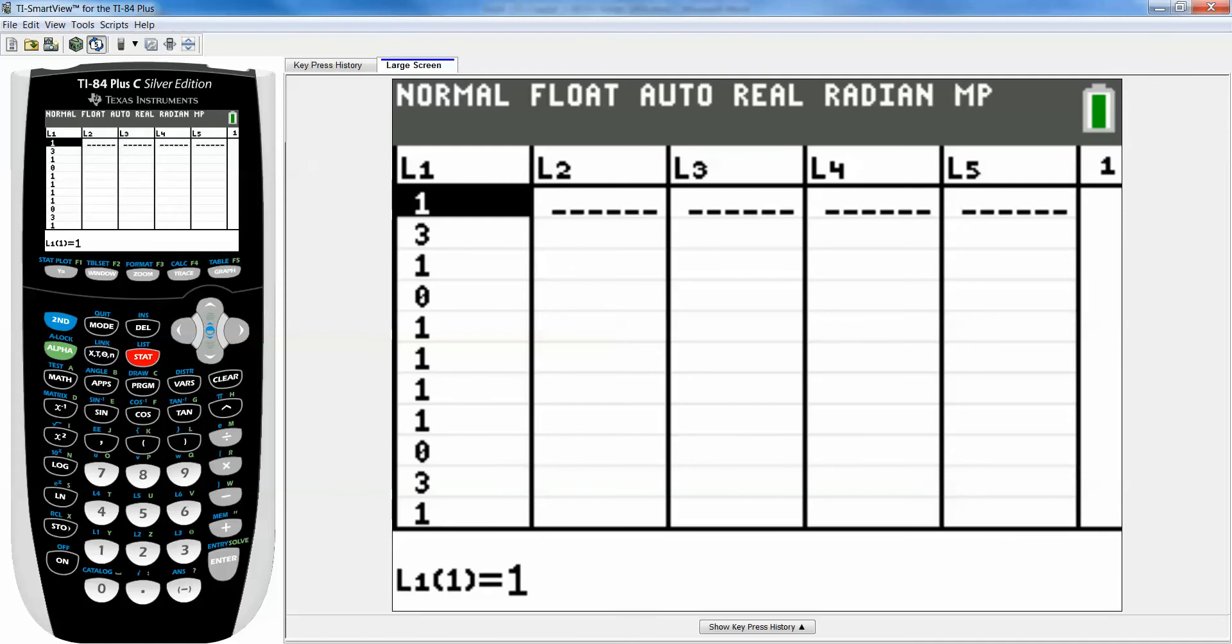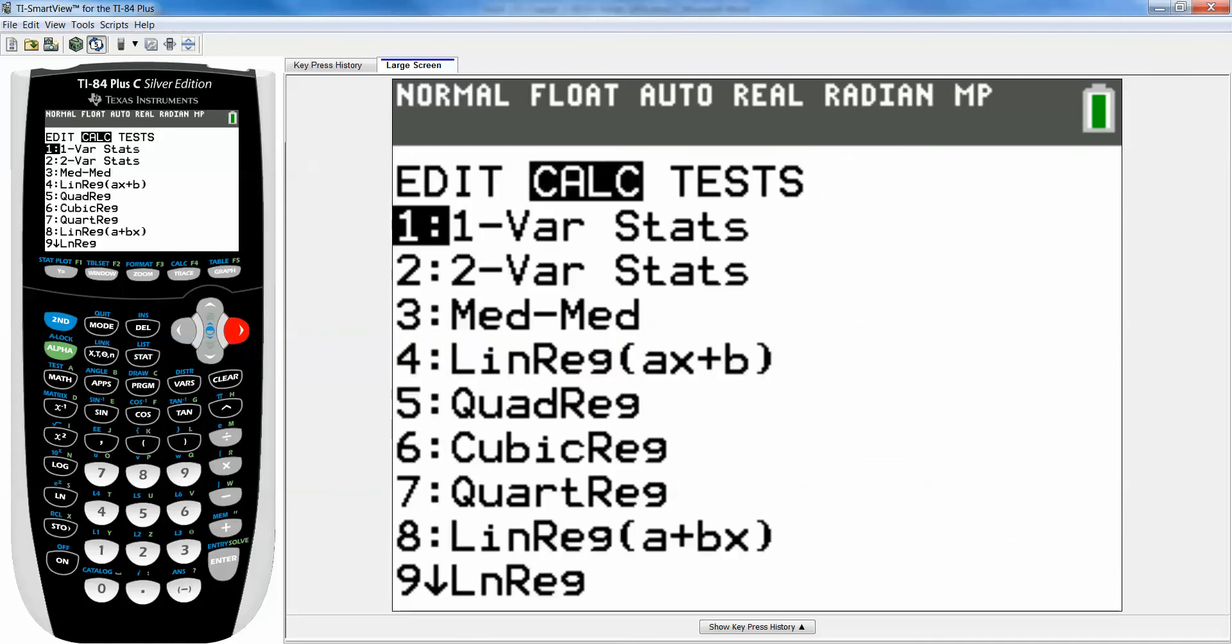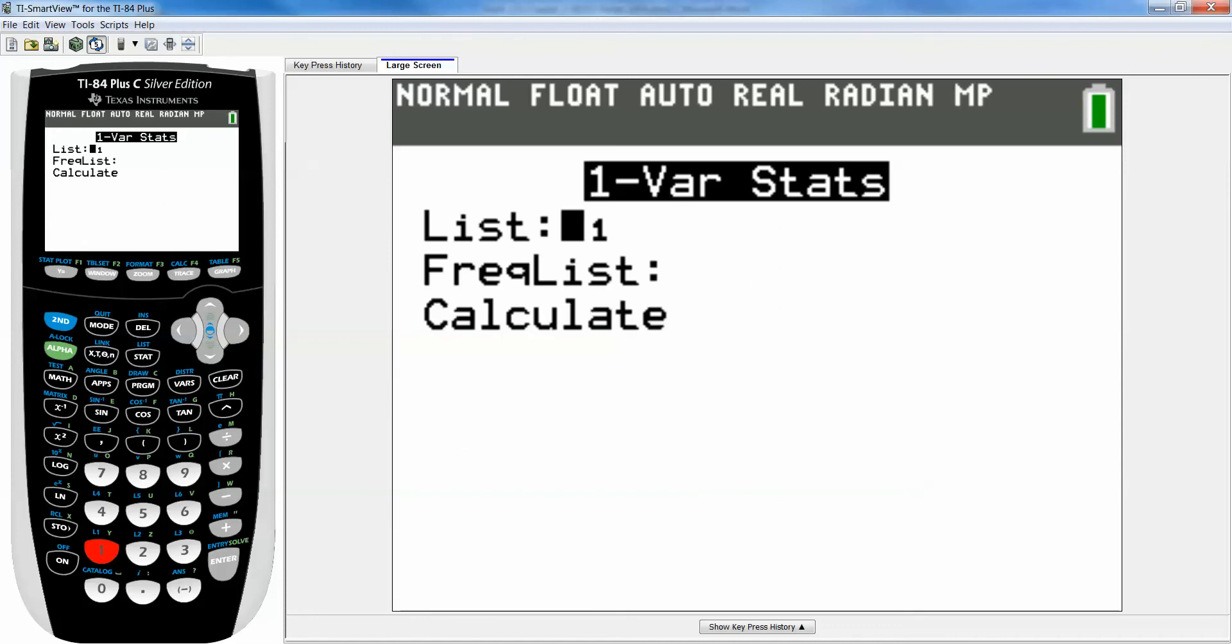You'd enter all your data in but we actually have all the data in here already. Then I'm going to press STAT, CALCULATE, number 1 which is one variable STATS. My data is in L1. The frequency list we're just going to leave blank for right now because we have one single column of data. We're going to move down to CALCULATE and press ENTER.